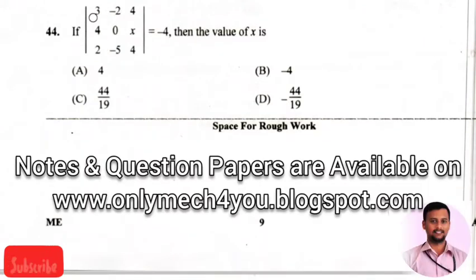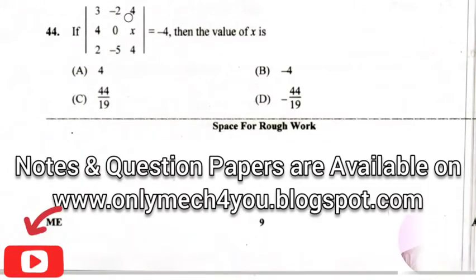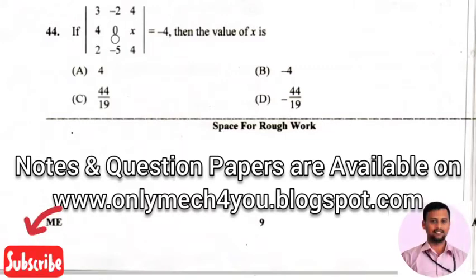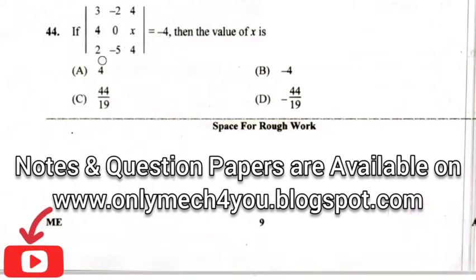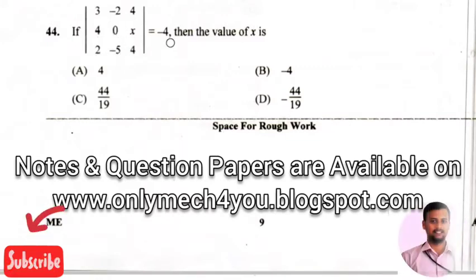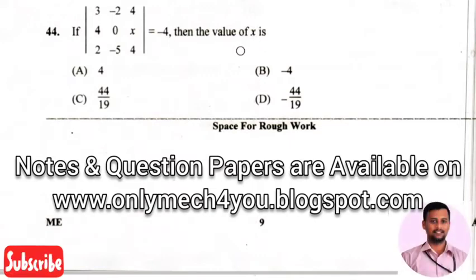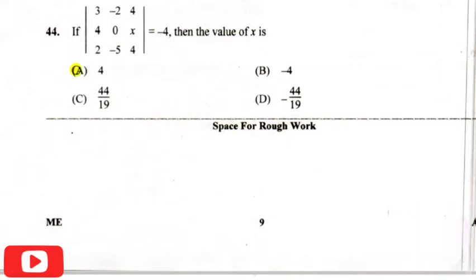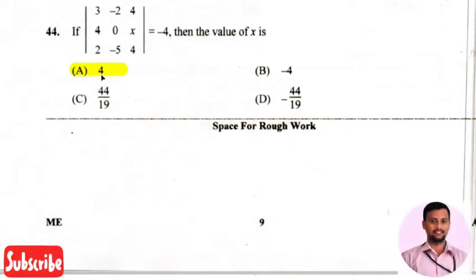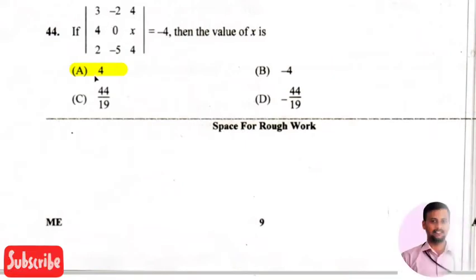The next question is: if the determinant of three, minus two, four; four, zero, x; two, minus five, four equals minus four, then the value of x is — the right answer is option one, that is x equals four.